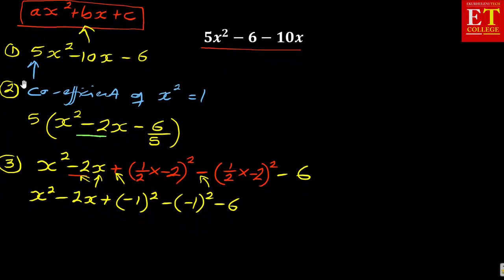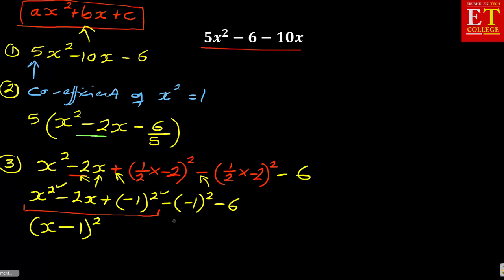The first three terms can now form a perfect square — that's why it's called completing a square. You look at the powers: you have x and minus 1. You write x minus 1, all squared. Then you simplify the remaining part: minus bracket minus 1 squared is 1, so minus 1 minus 6 gives you negative 7.